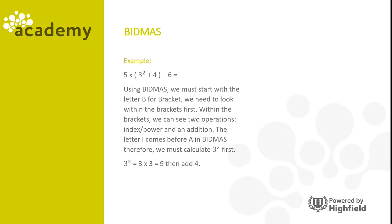Three squared is three times three, which is nine. Then we add four. If we look at the calculation after dealing with three squared, it becomes five times nine plus four minus six. So nine plus four is thirteen, making it five times thirteen minus six.